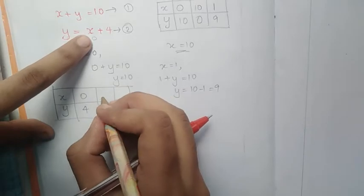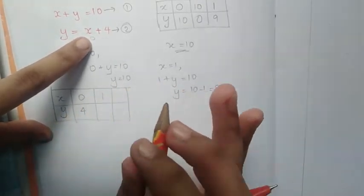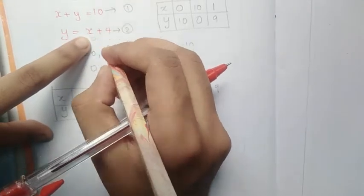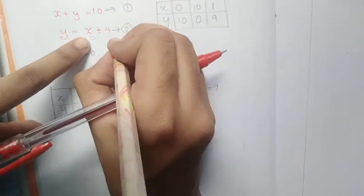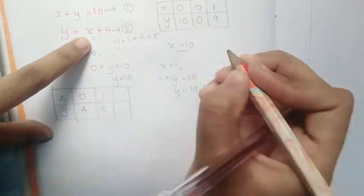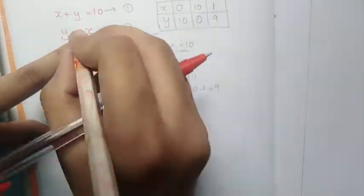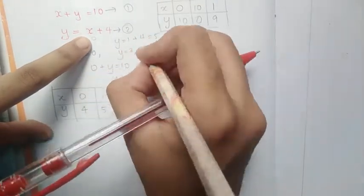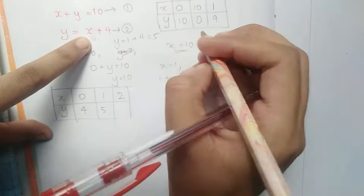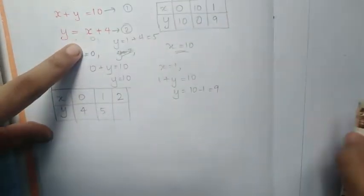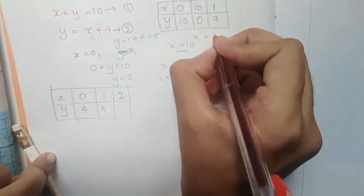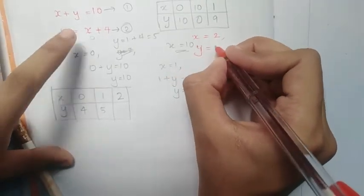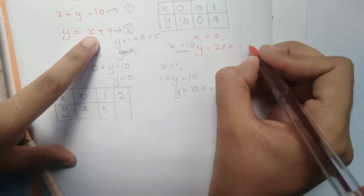For x equals 1, y equals 1 plus 4, so y equals 5. For x equals 2, y equals 2 plus 4, which equals 6. These give us points to plot for the second equation.